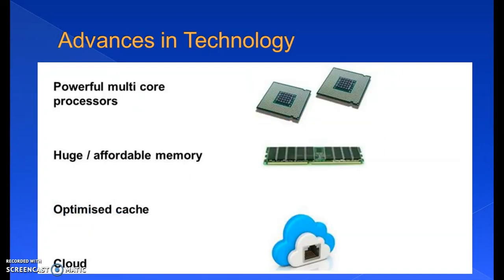The advances in technology include powerful multi-core processors, huge affordable memory, optimized cache, and cloud. Multi-core processors enable parallelism of tasks, meaning more throughput of data and faster processing to give us real-time responses. Big memory enables us to fit an entire organization's database in memory, which means we lose the mechanical spinning disk and its latency. For a detailed explanation of in-memory databases, you can search for the SAP HANA overview by Vikram P. Madhuri.